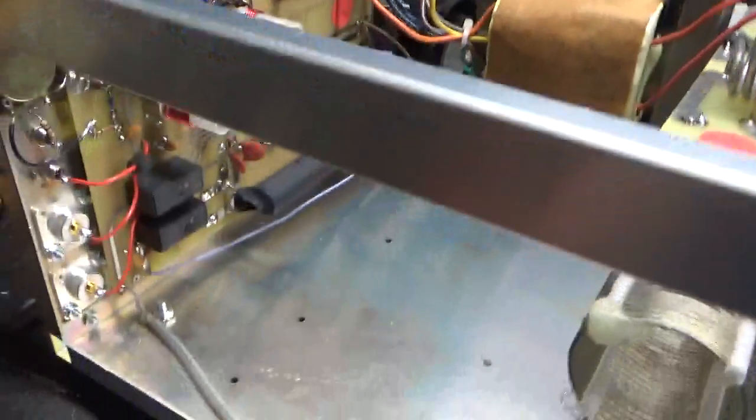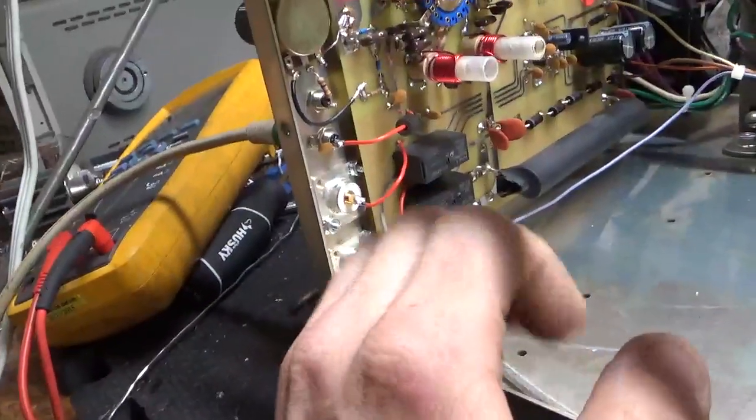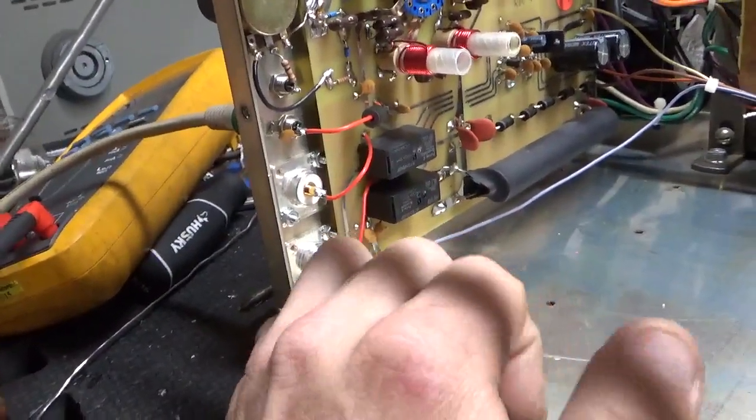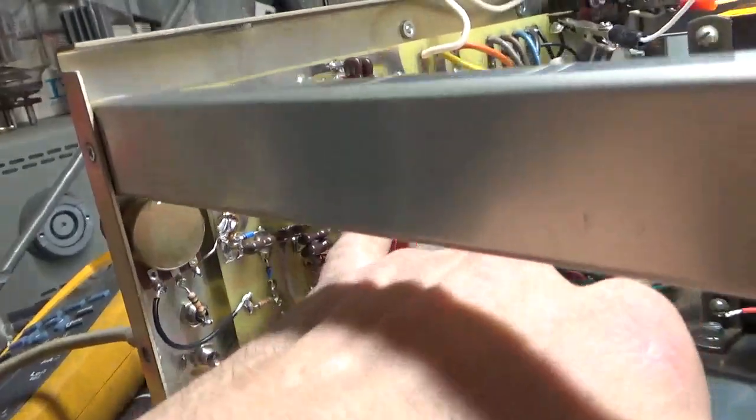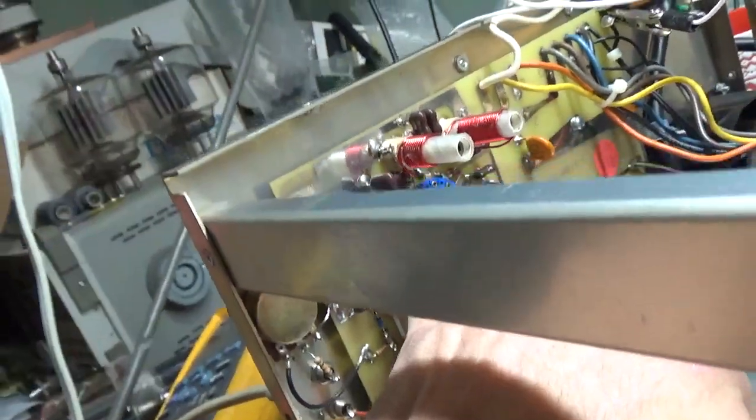So I went ahead and keyed it. Took a continuity reading between the input connector and the input circuit over here. So I went right to the wiper on the input rotary. I have continuity.